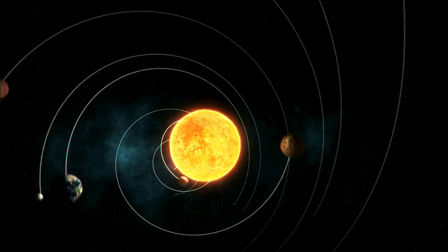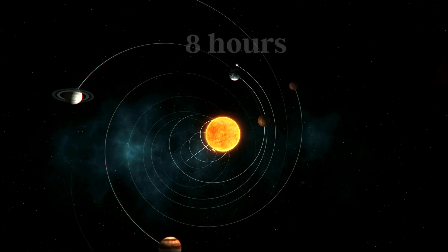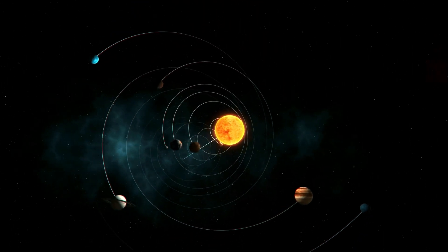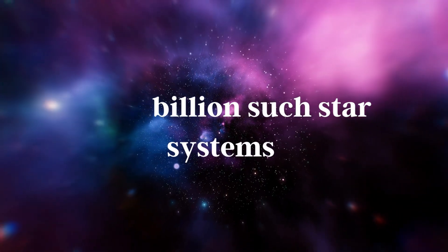To take this into perception, it takes 8 hours for light to get out of our solar system only, and the Milky Way has 2 billion such star systems as our solar system.